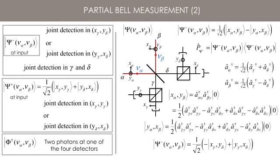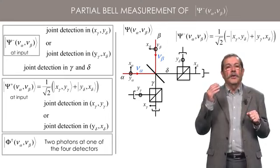For components phi-plus or phi-minus in the input alpha beta, only one detector fires and shows the detection of two photons. One knows that it is either phi-plus or phi-minus, but one cannot distinguish the two cases.